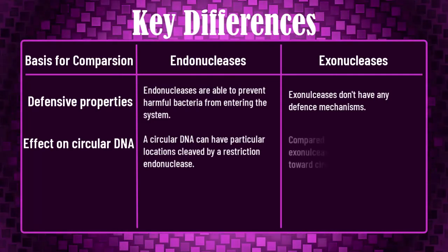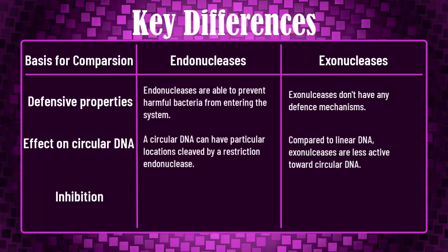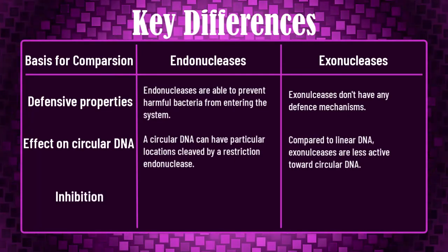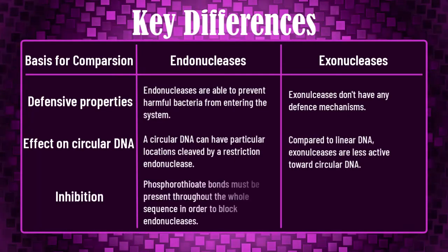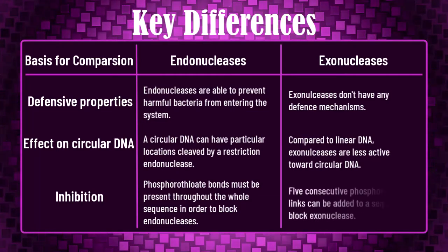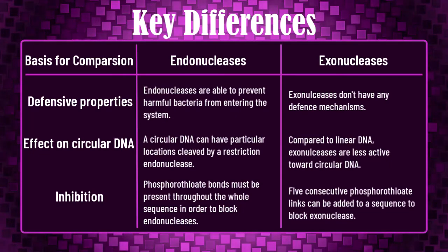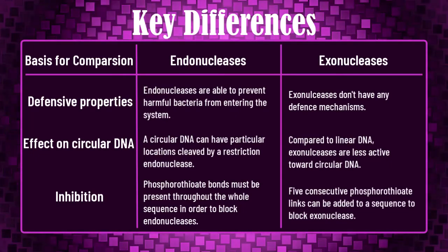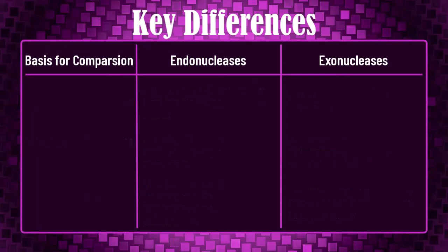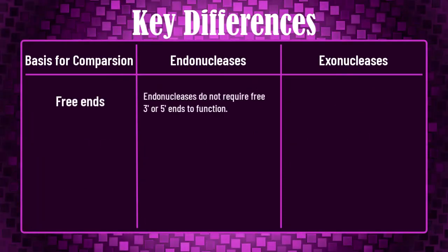Regarding the effect on circular DNA: a circular DNA can have particular locations cleaved by a restriction endonuclease, whereas compared to linear DNA, exonucleases are less active towards circular DNA. Regarding inhibition: phosphodiester bonds must be present throughout the whole sequence to block endonucleases, whereas five consecutive phosphodiester links can be added to a sequence to block exonucleases.